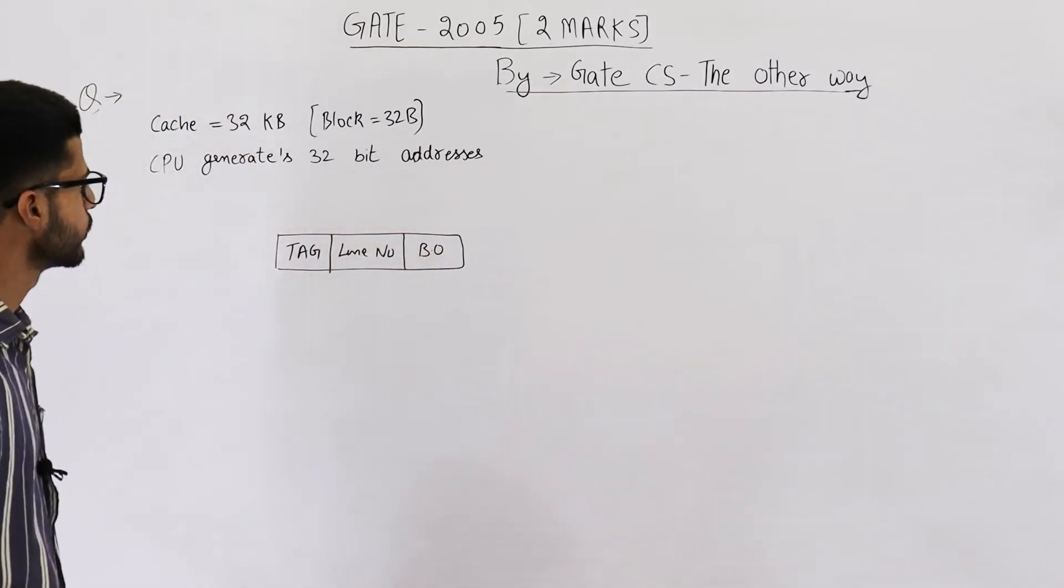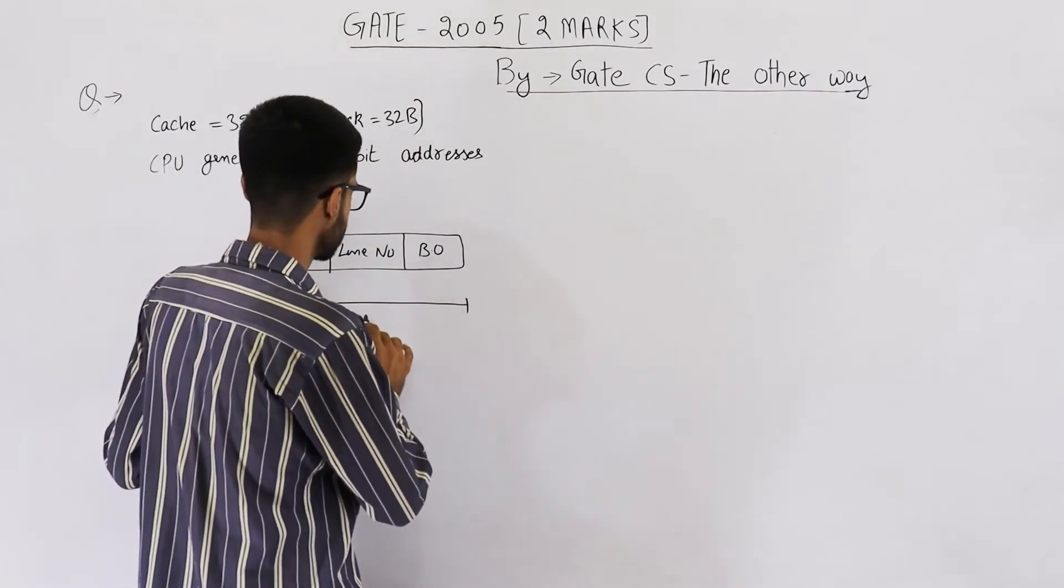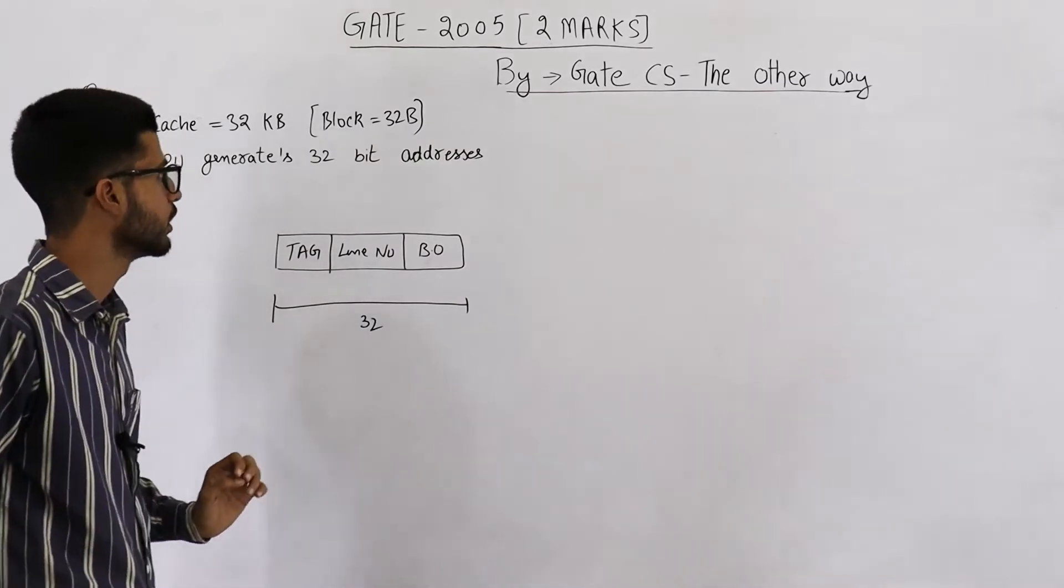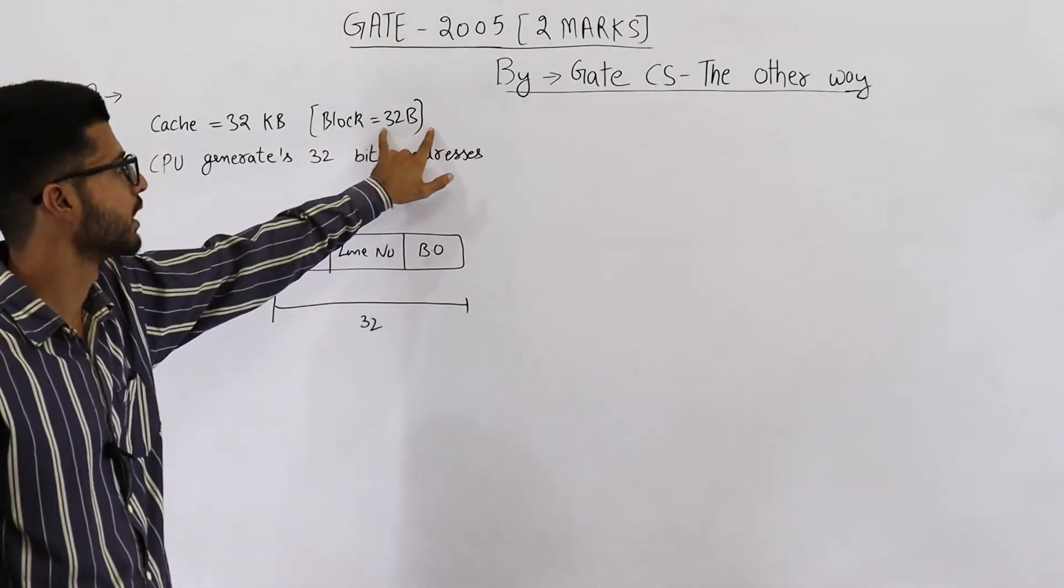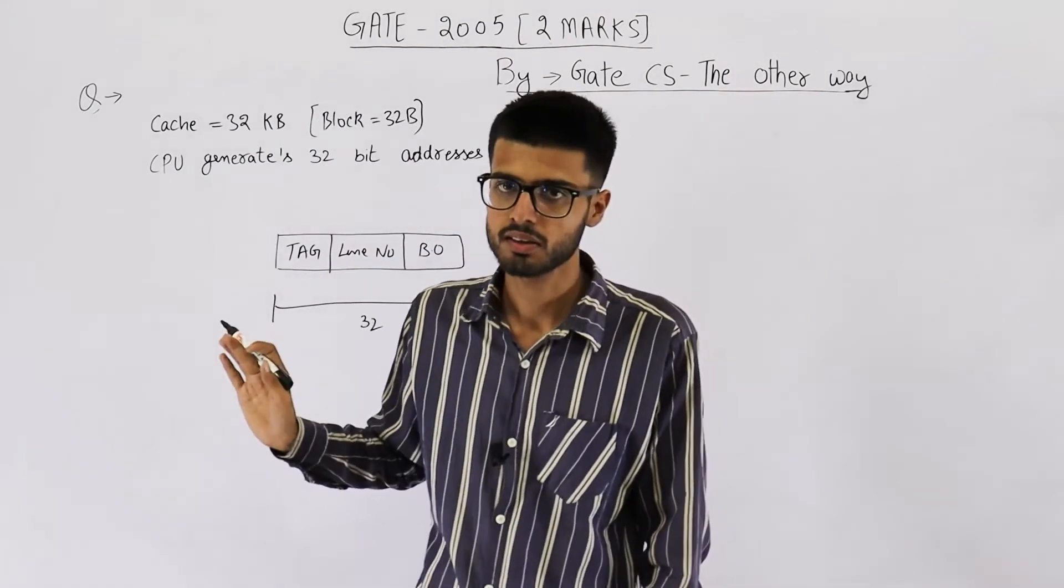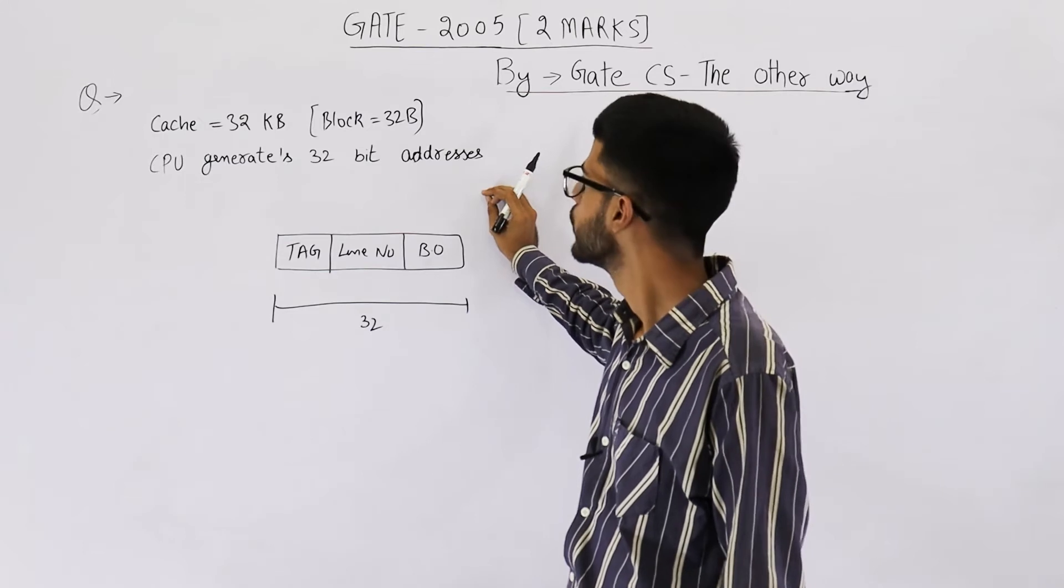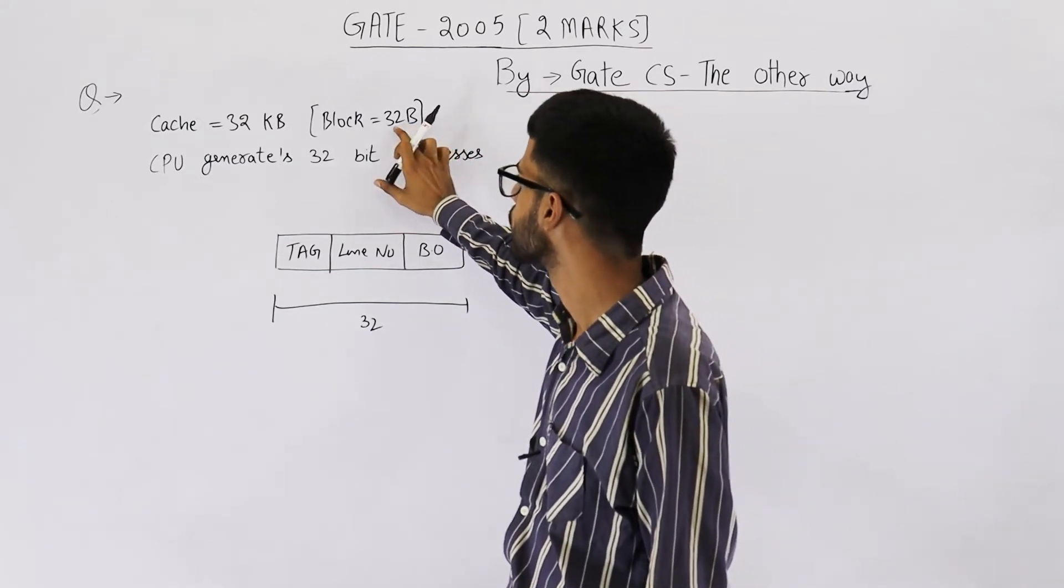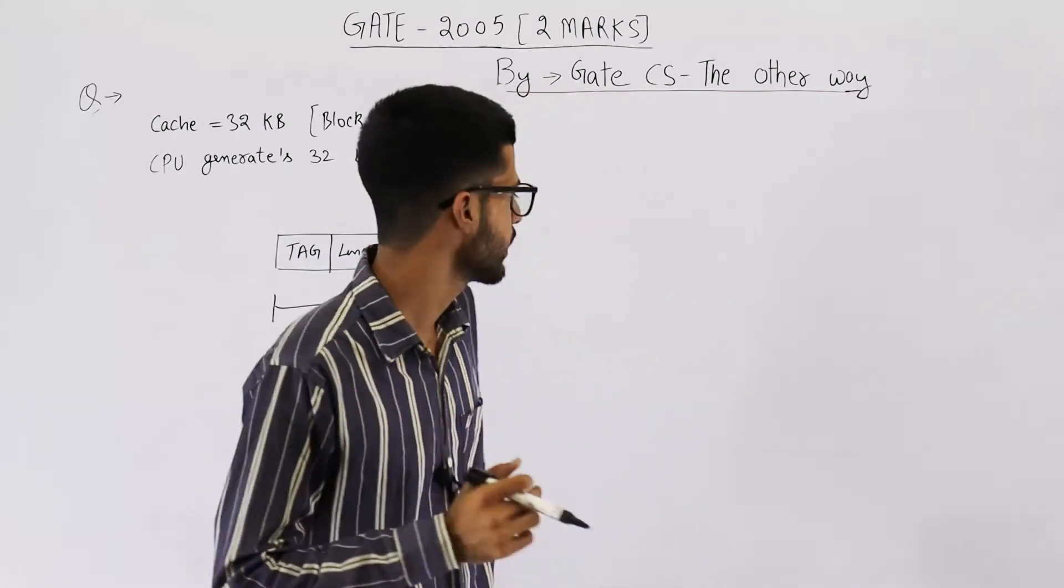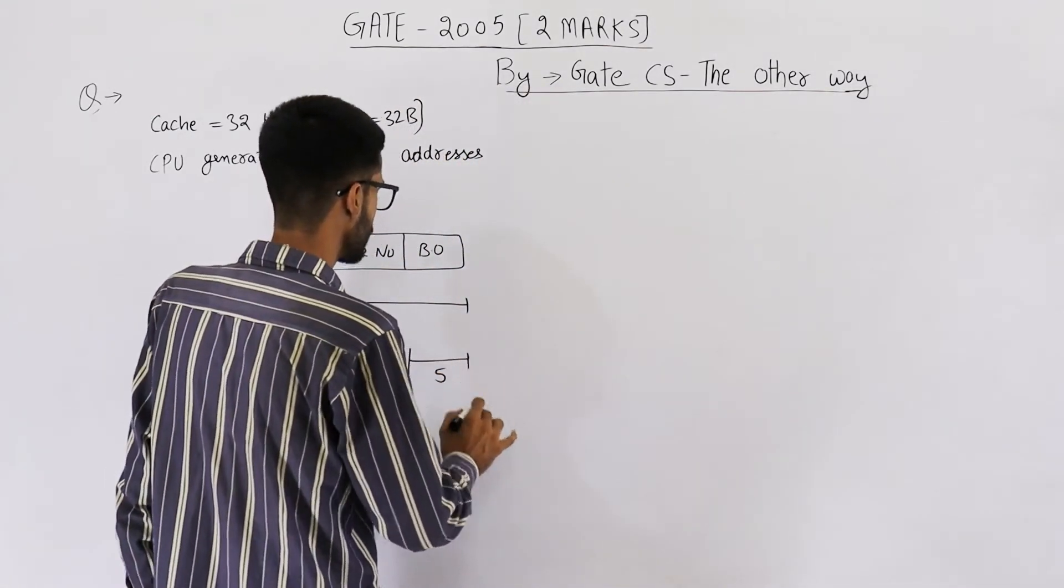Now the total length of this physical address is 32 bits as mentioned in the question. Block has 32 bytes. Assuming one byte is one word, that means when nothing is specified, you will always assume byte addressable. So assuming one byte is equal to one word, you get to know that block has 32 words. To identify one of these 32 words, 5 bits will be required.